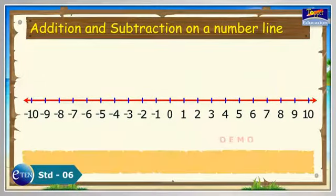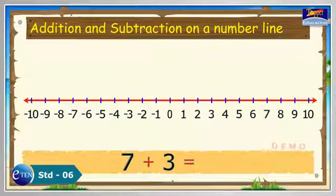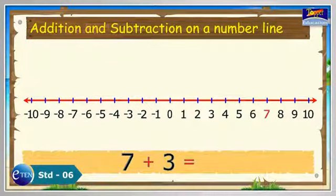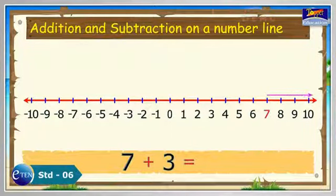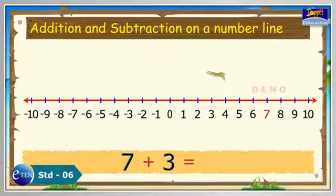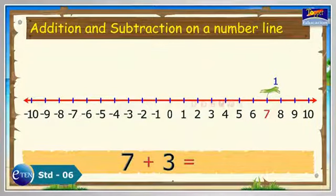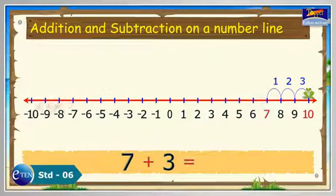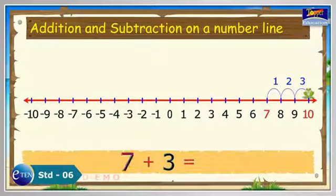Find the sum of seven plus three on number line. Here we have three, which is positive, so we will move three numbers to the right of seven. Look, a frog is on number seven. Now, the frog will take three jumps to its right side and reach to ten, which is the required sum. Thus, seven plus three is equal to ten.